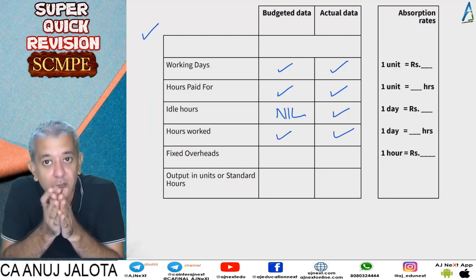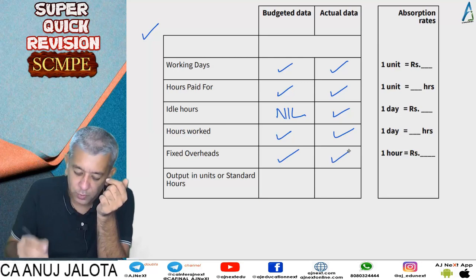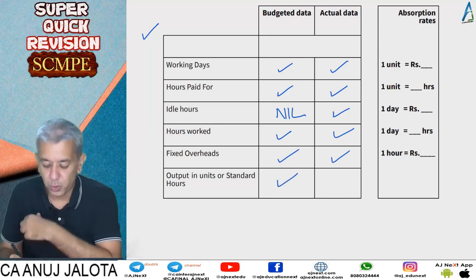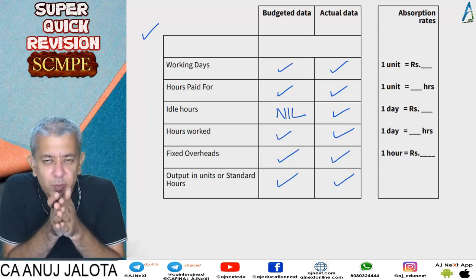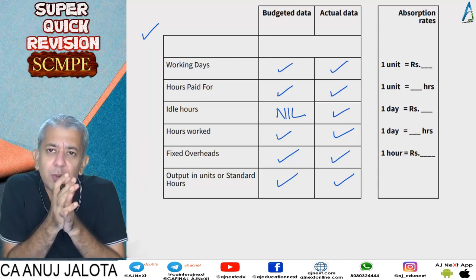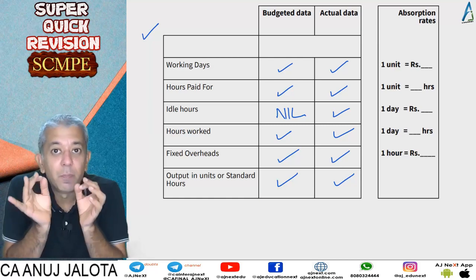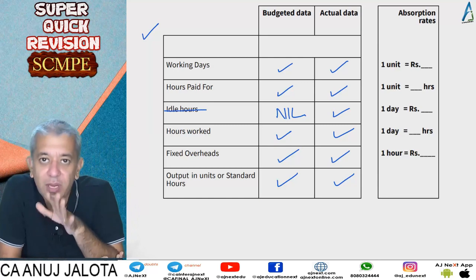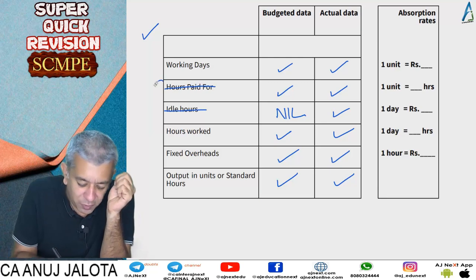In actual data there might be idle hours — take hours paid for and subtract idle hours to arrive at hours worked. After that, what should the fixed overheads incurred be, and what was the actual fixed overhead incurred. Lastly, what should have been the output and what was the actual output — which can be expressed in terms of units or standard hours.